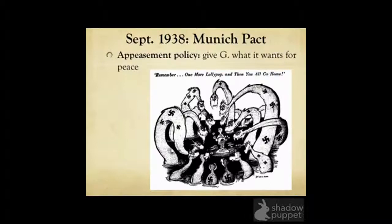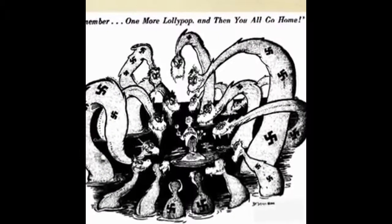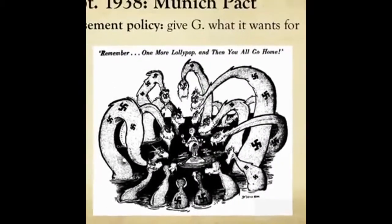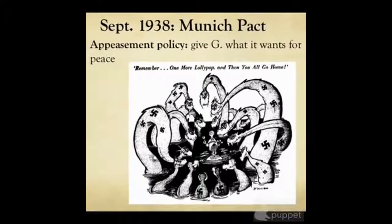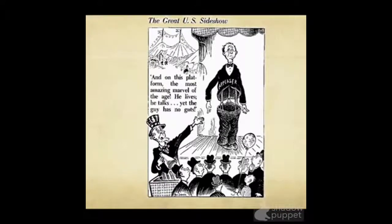In March of 1939, Hitler broke the Munich Pact and took the rest of Czechoslovakia. Notice Dr. Seuss's political cartoon making fun of appeasement: "One more lollipop and then you all go home" — showing a Nazi monster threatening an appeaser offering lollipops. Dr. Seuss clearly wasn't a fan of Chamberlain's policy. Chamberlain found himself in political trouble, faced a vote of no confidence, and was replaced by Winston Churchill.